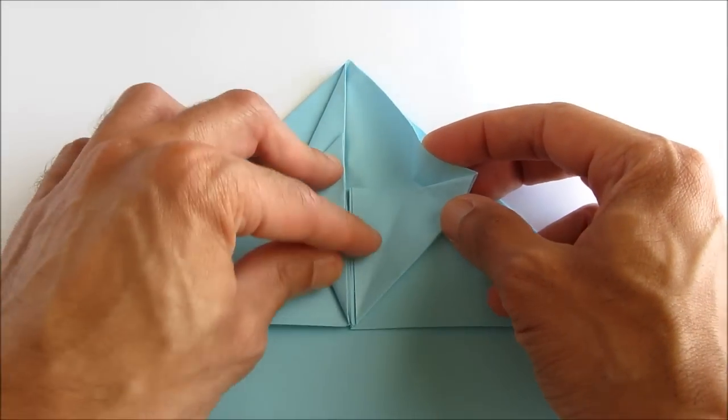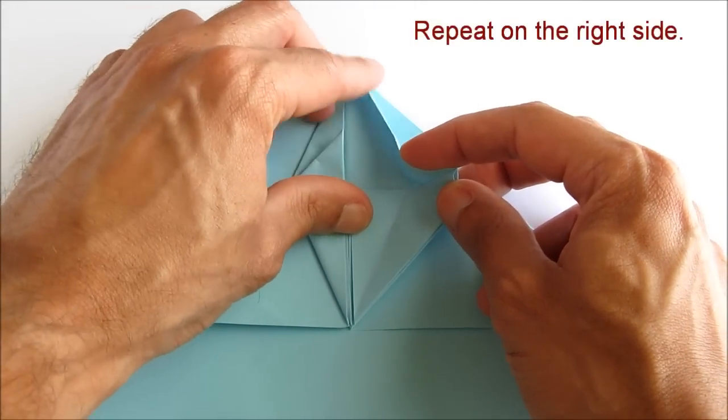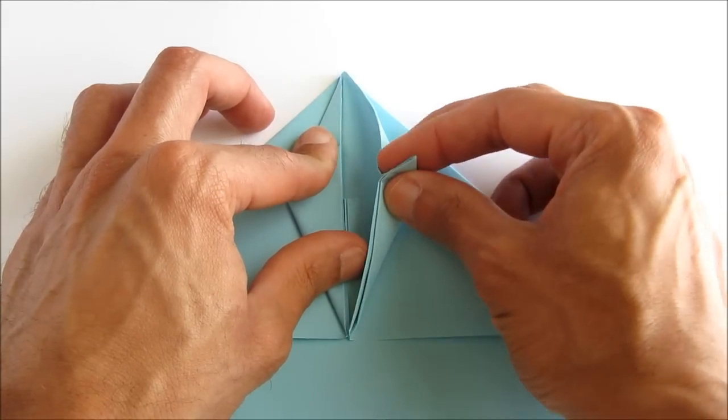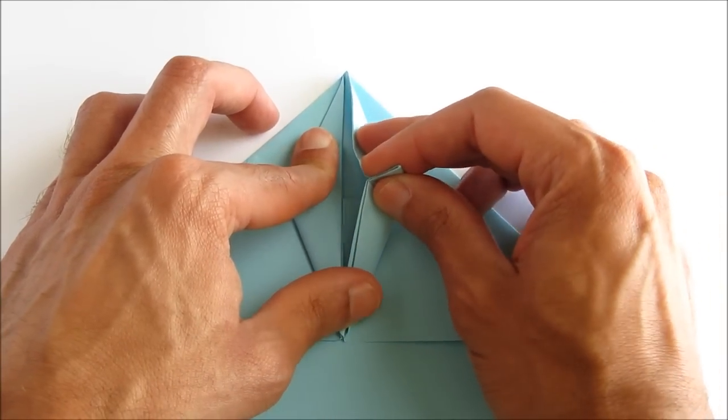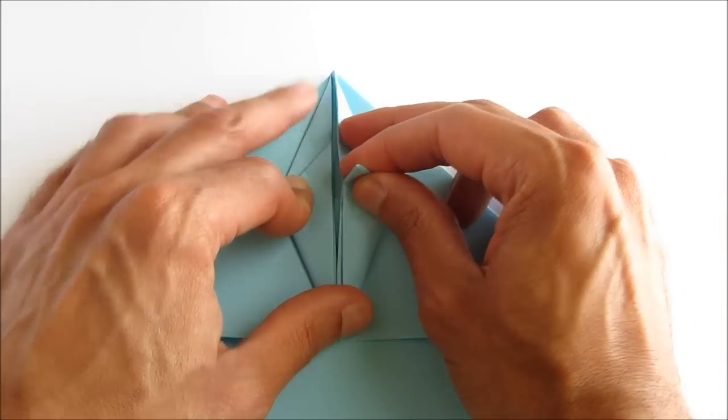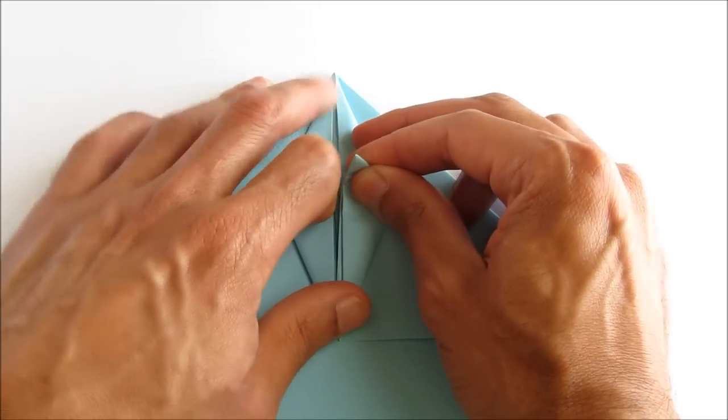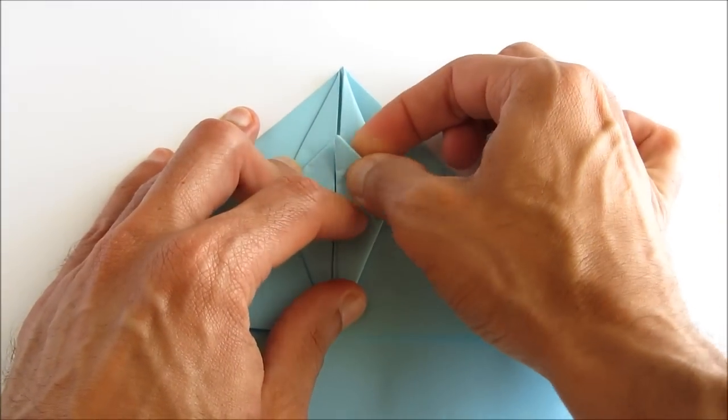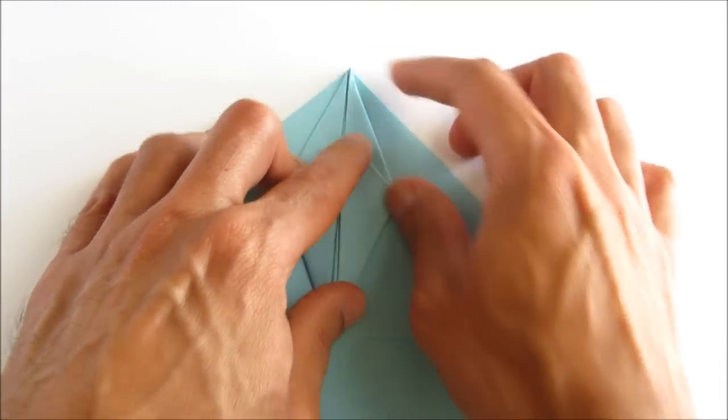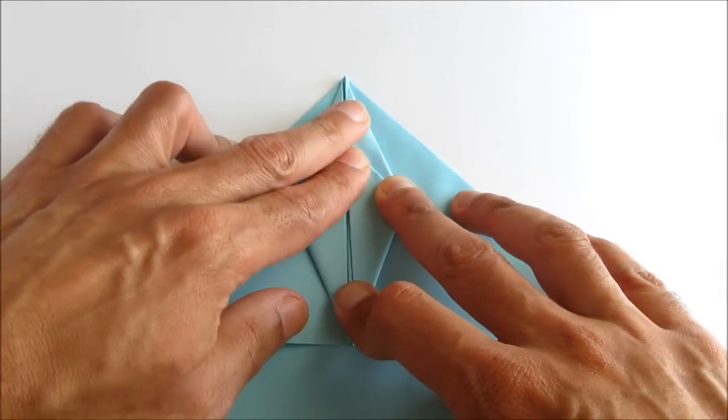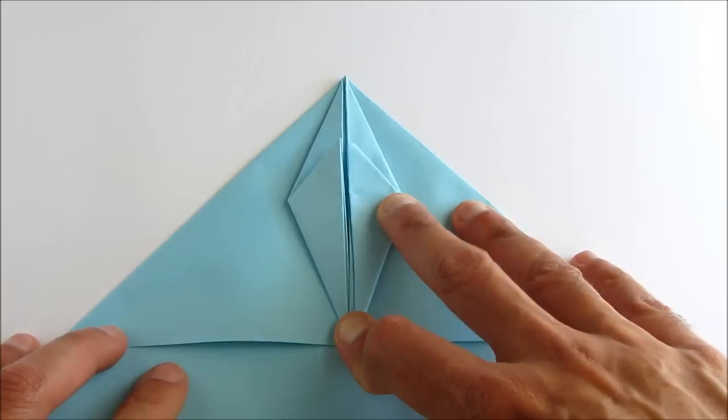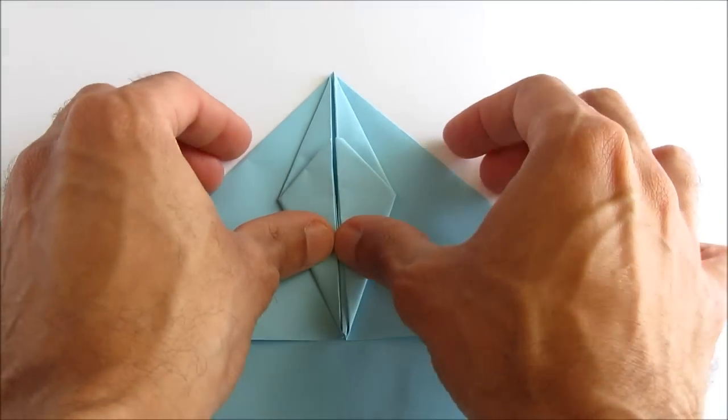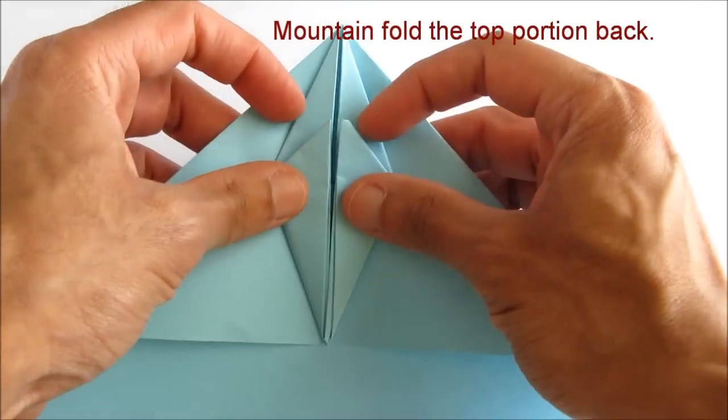Repeat that squash fold on the right side. Now you want to do a mountain fold to take that top corner back behind you.